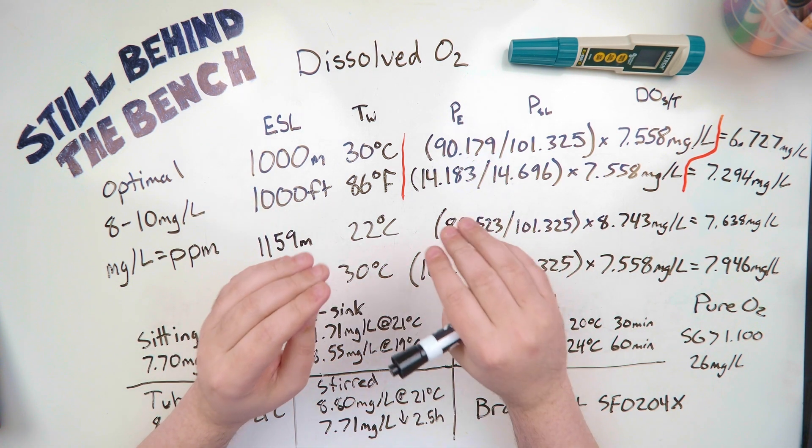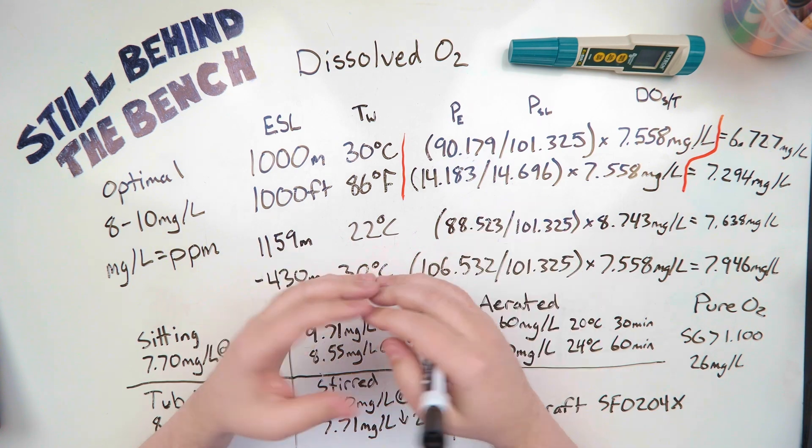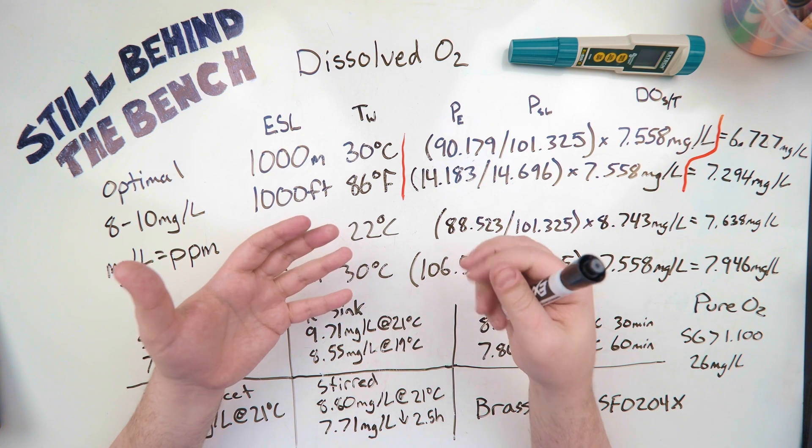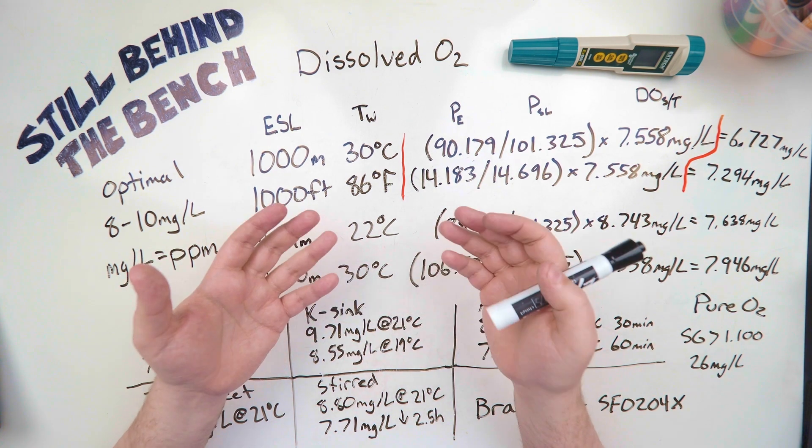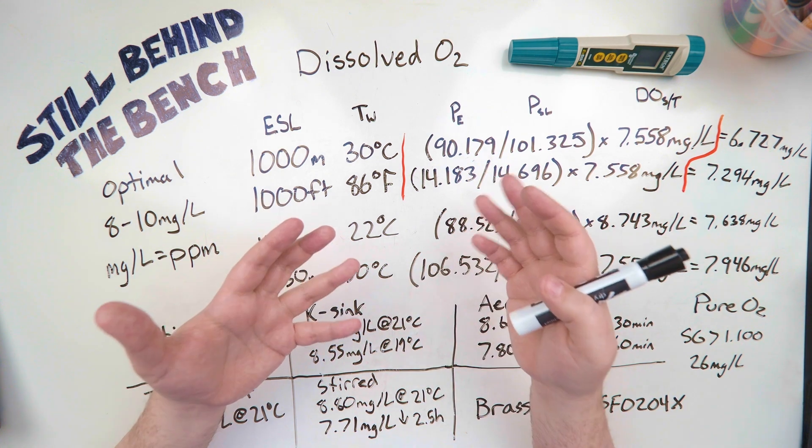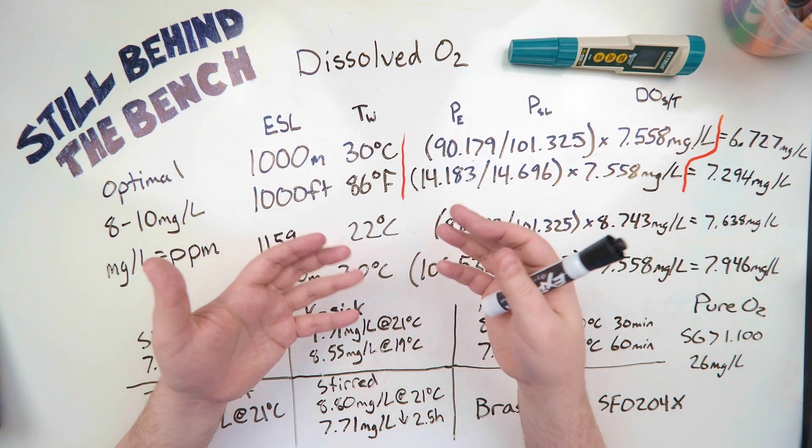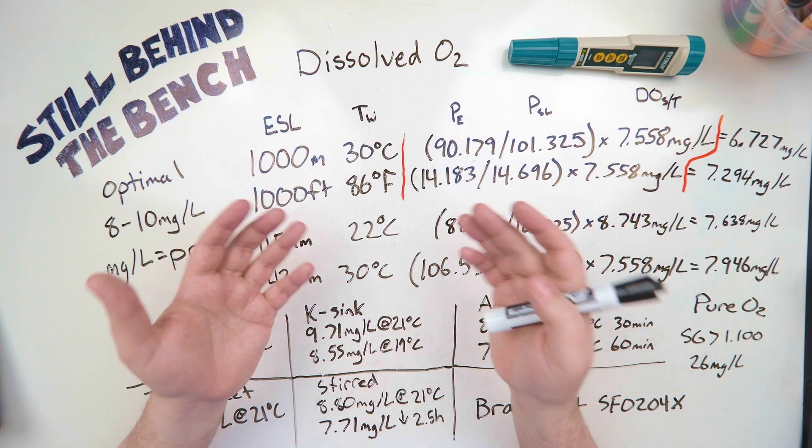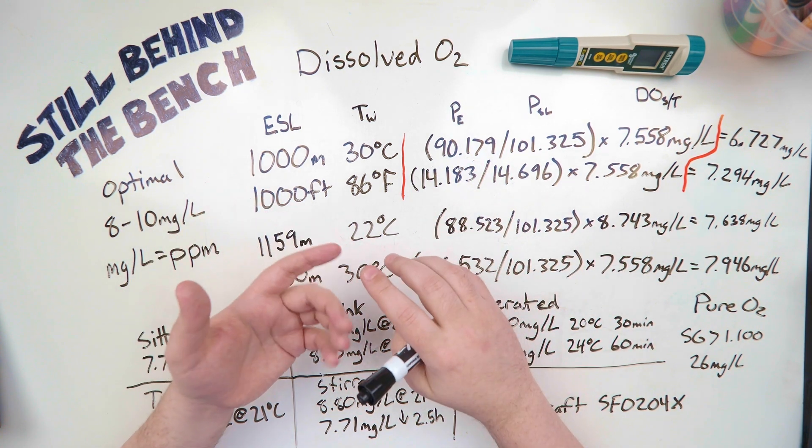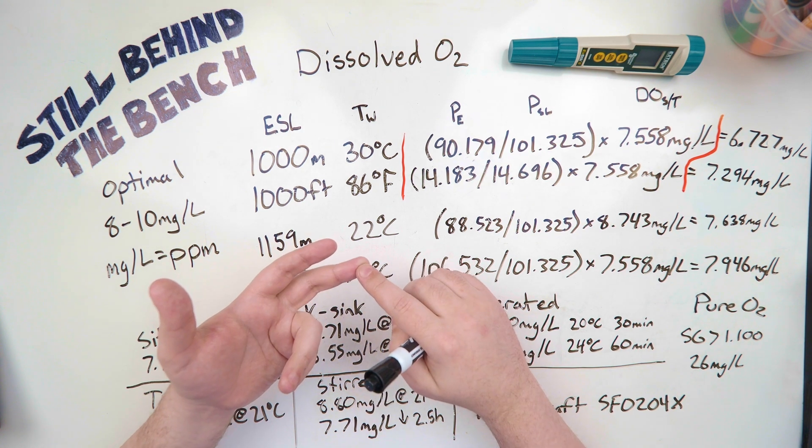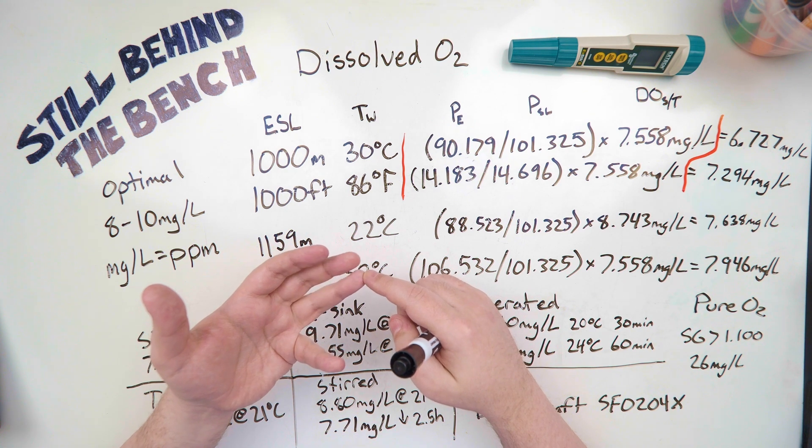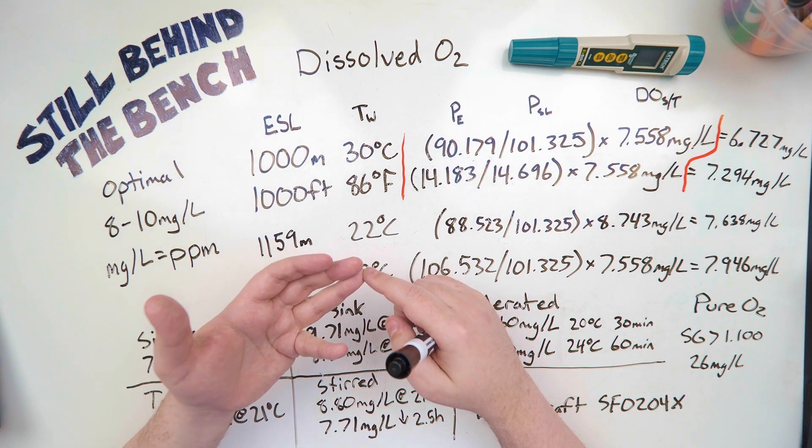All right so yeast need oxygen in order to respirate and replicate. That oxygen needs to be dissolved into the wash, into the water, in order for the yeast to be able to access it. And that's true for a lot of organisms that live in water: fish, crustaceans, mollusks, other arthropods, plants. If the oxygen is not dissolved in the water then they don't have access to it. But I'm not going to be talking about why organisms need oxygen. This video is going to be about how much oxygen yeast need, how to figure out how much oxygen is available where you live, and then what kind of outcomes you can expect for various methods of introducing oxygen.